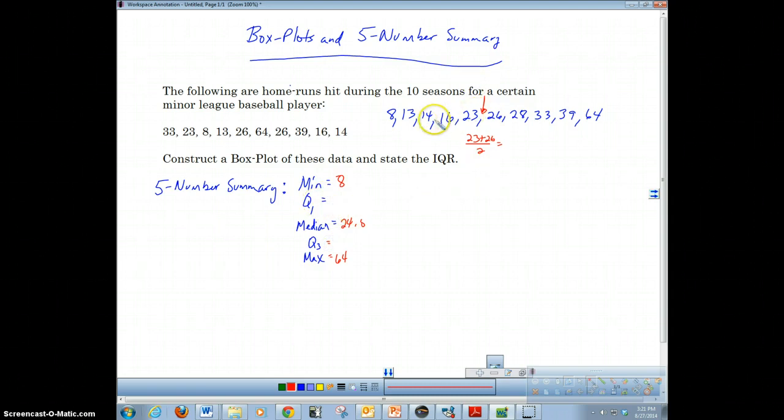Now we can find the first quartile. So here's our median, we've got to go halfway in between our median. Here's quartile 1, right there at 14. And quartile 3 is right here. So that's Q3, which is 33.